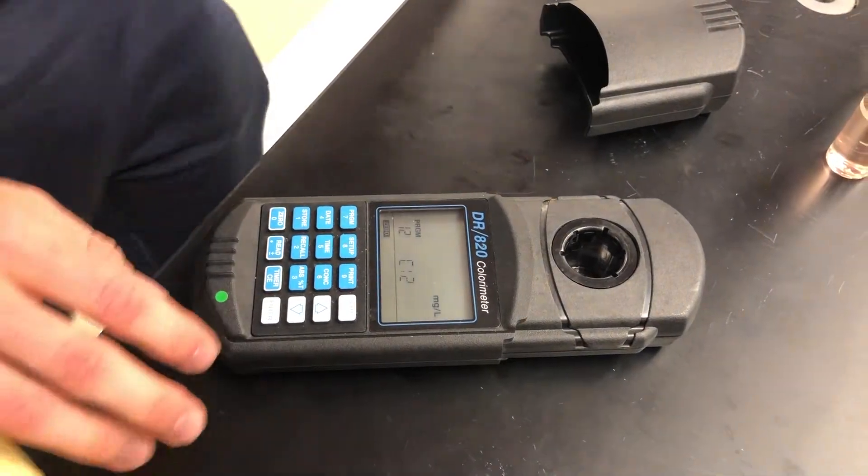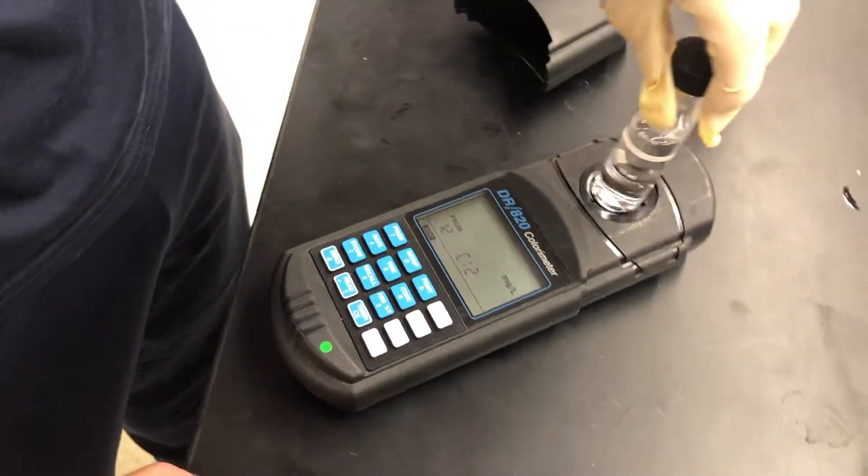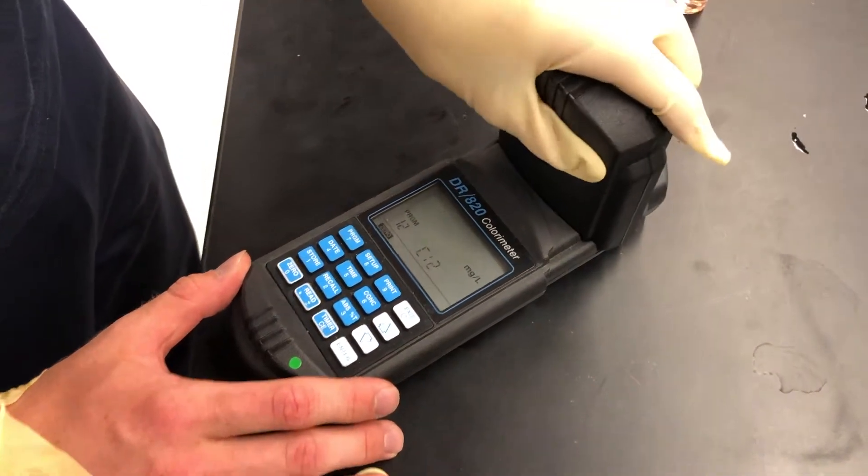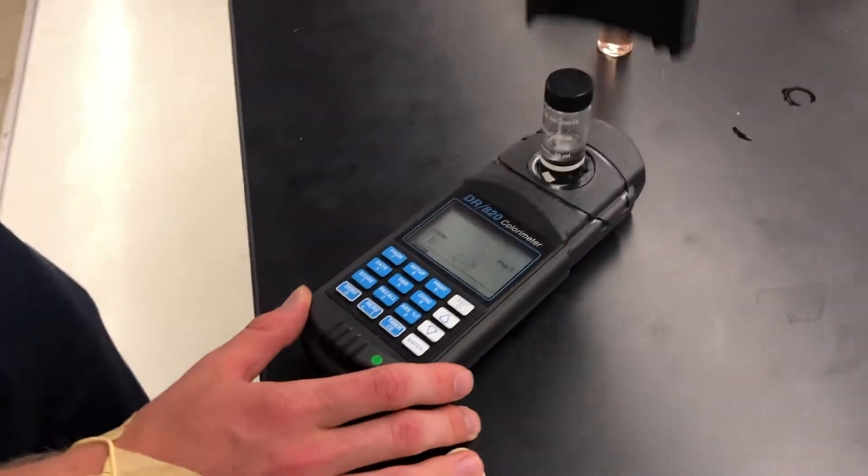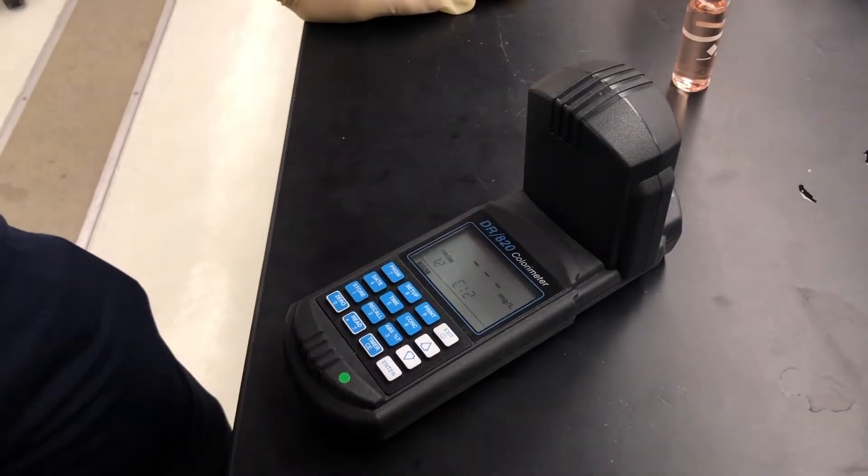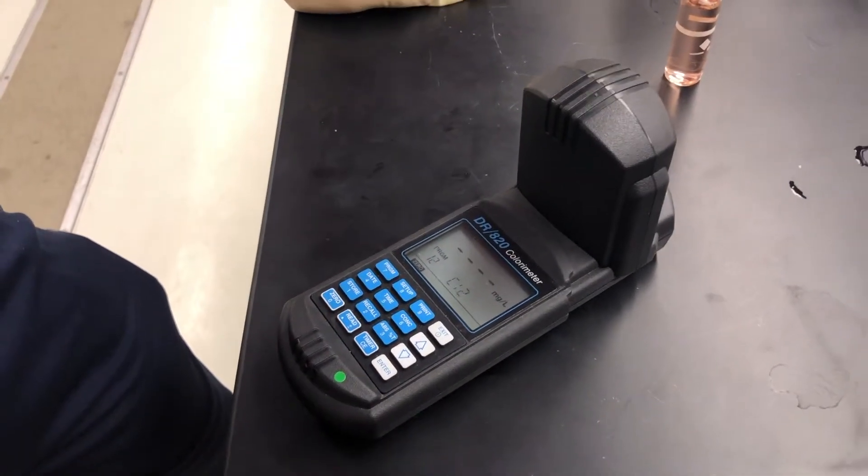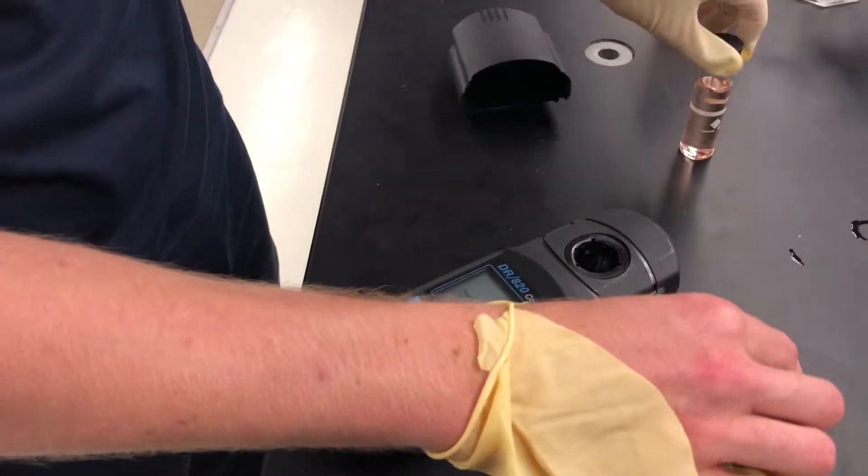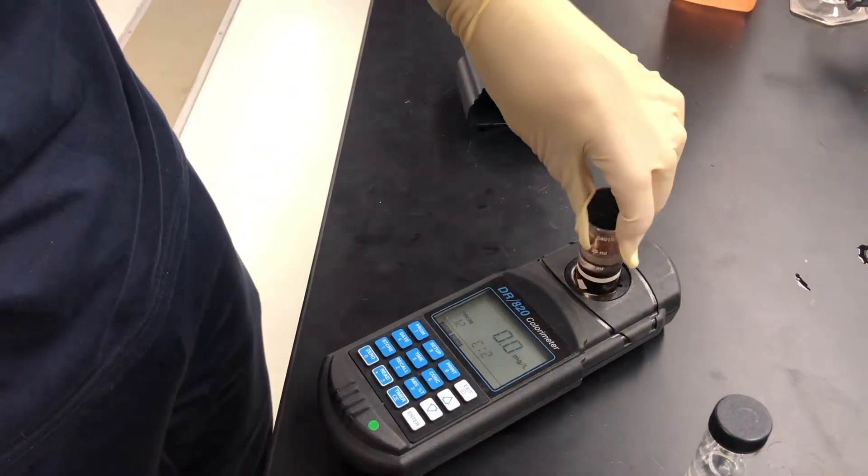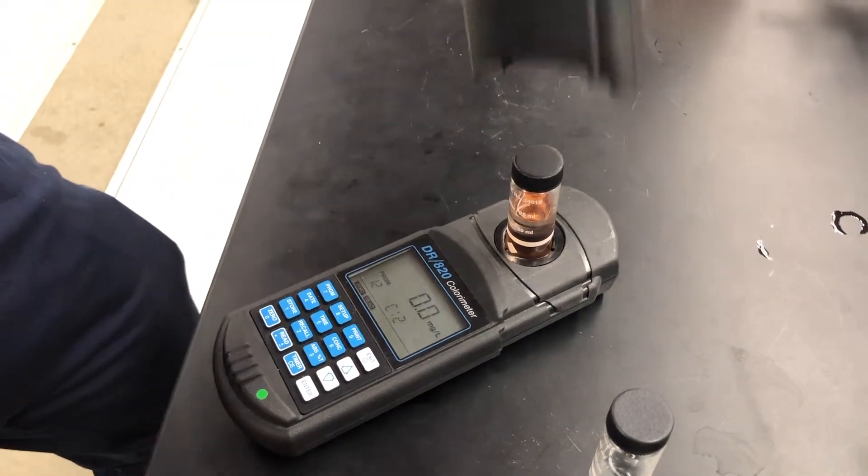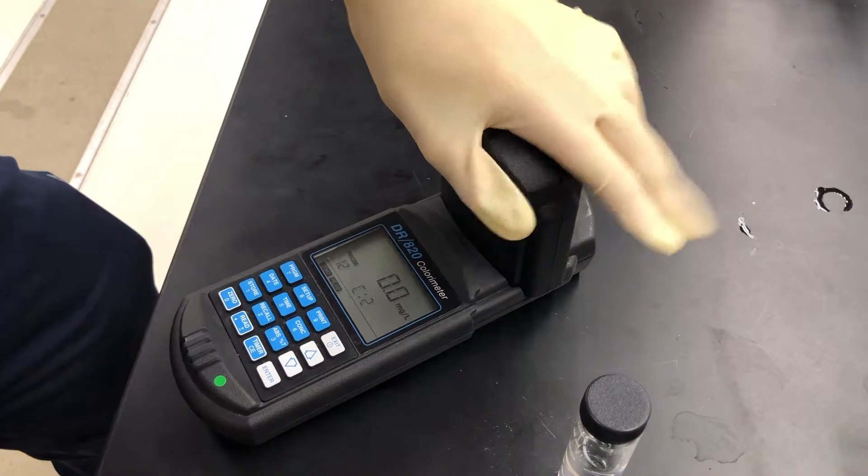We enter. We have to zero with the water. So we cover with this with diamond in front. Use zero. Okay. Now it's zero. You switch. You have the water. Make sure you wipe with towel to get fingerprints off. And now we read.